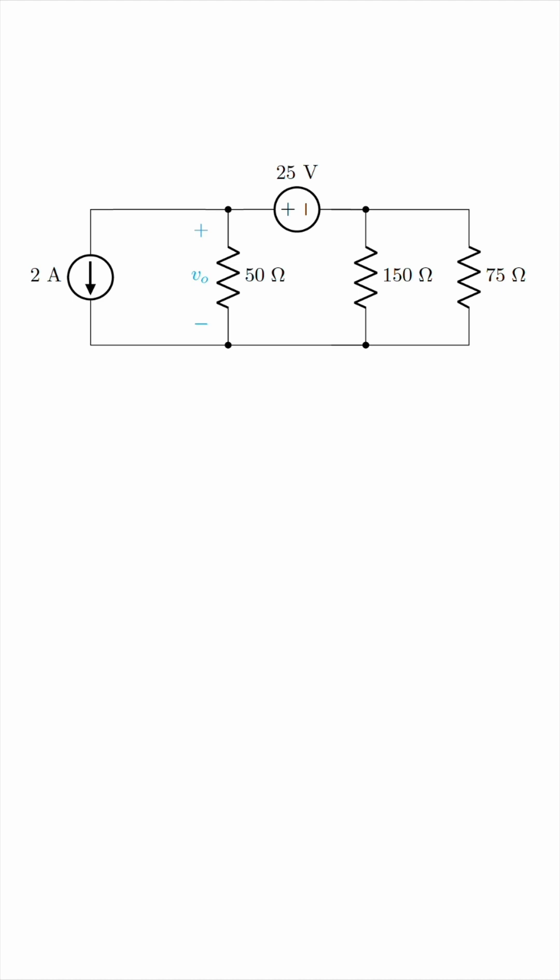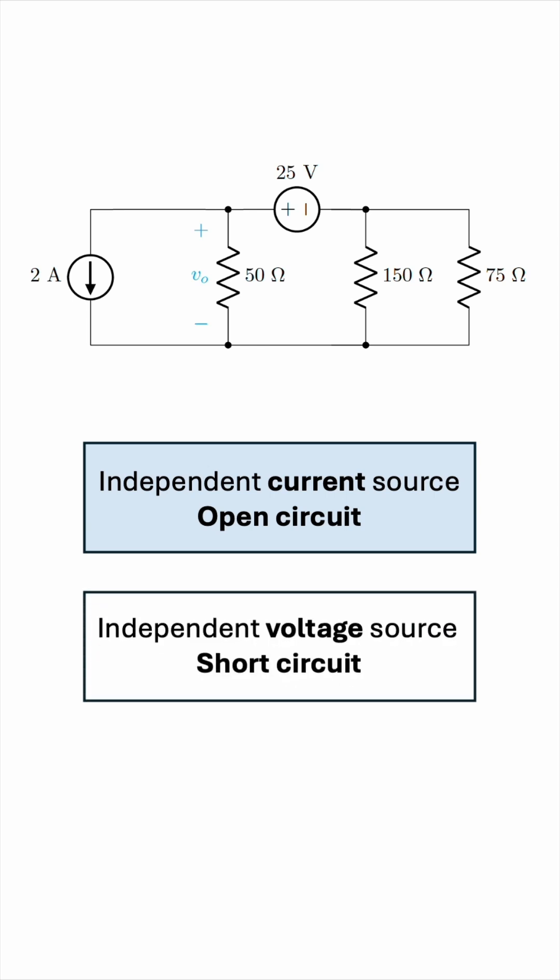When you want to deactivate a current source, you replace it with an open circuit. When you want to deactivate a voltage source, you replace it with a short circuit. With this in mind, let's use superposition to analyze this circuit.